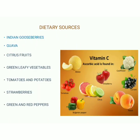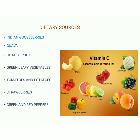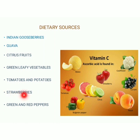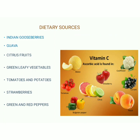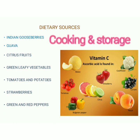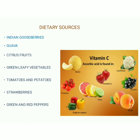Dietary sources: Indian gooseberries and guava are the richest sources of Vitamin C. Other powerful sources include citrus fruits like lemon and oranges, green leafy vegetables like broccoli, cauliflower, spinach, tomatoes and potatoes, strawberries, and green and red peppers. Trace amounts of Vitamin C are present in meat, fish, cereals and pulses. Milk is a very poor source of Vitamin C. In addition, cooking and storage of food for a long period can destroy the Vitamin C contained in them.